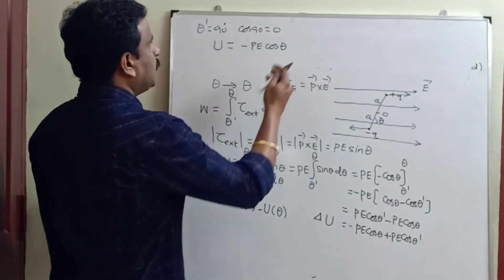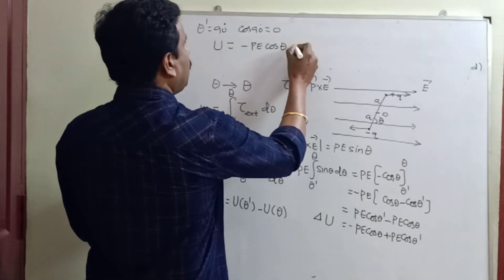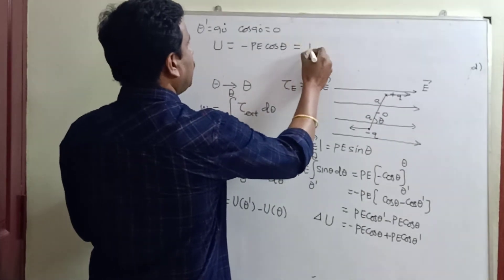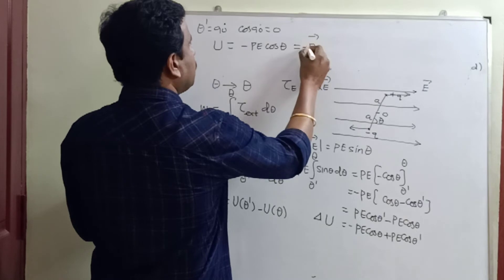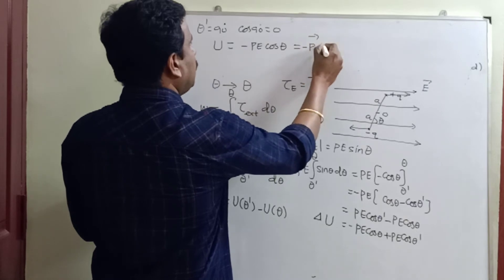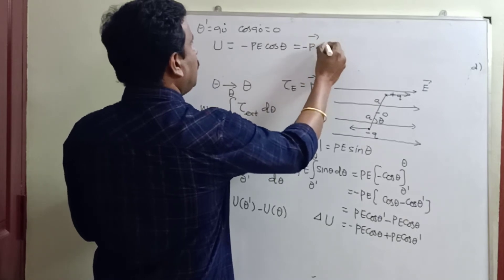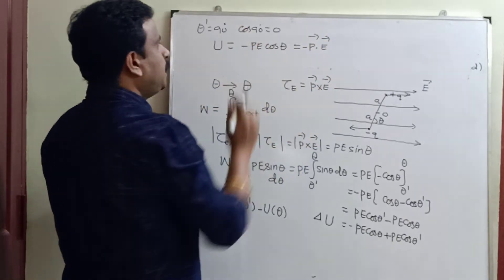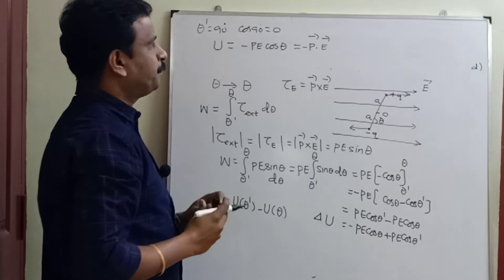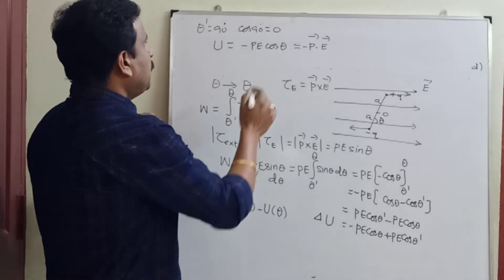If you use the vector formula, U equals minus p-vector dot E-vector, which is equal to minus pE cos theta. That is the vector form of the electrostatic potential energy of a dipole.